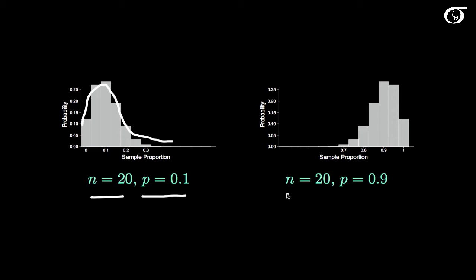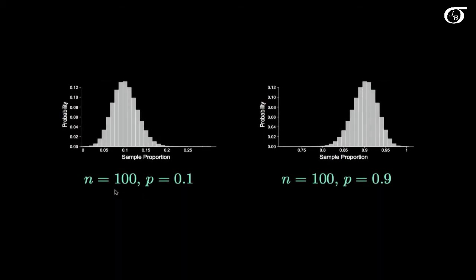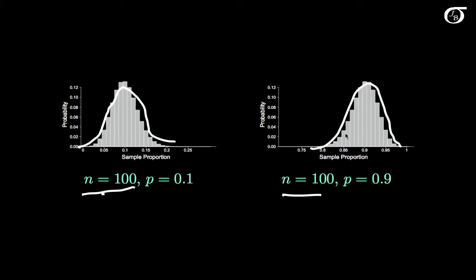Similarly, it's the mirror image when n is 20 and p is 0.9 — when we're close to 1 we get left skewness. But that skewness is going to go away as we ramp up the sample size. Leaving those proportions the same and increasing the sample size to 100, we get something much more normal. There's still a little skewness near the boundaries, but even when we're close to the boundaries with a large enough sample size, we're going to get something approximately normal. The central limit theorem helps us out here.